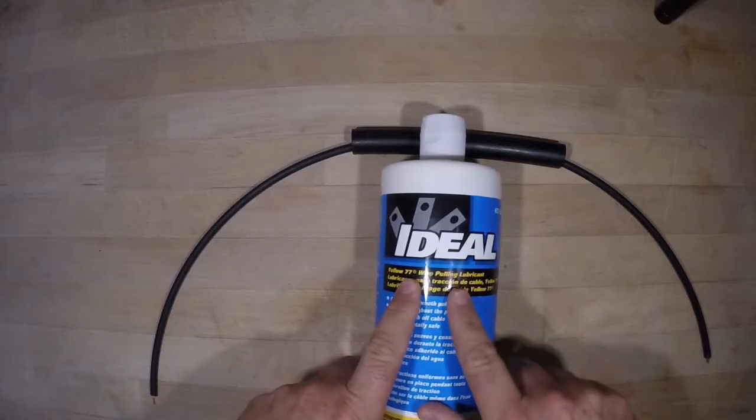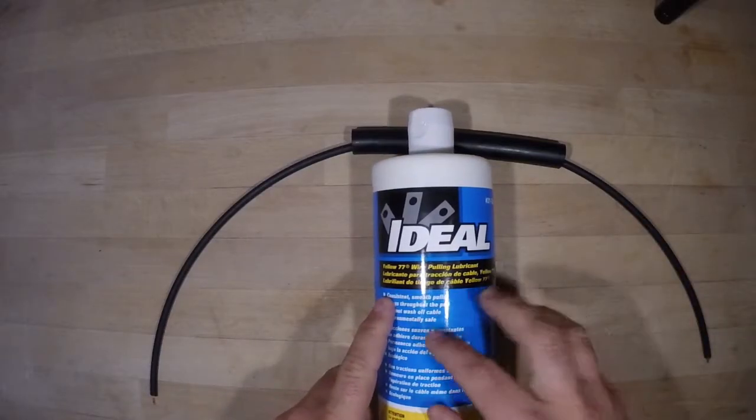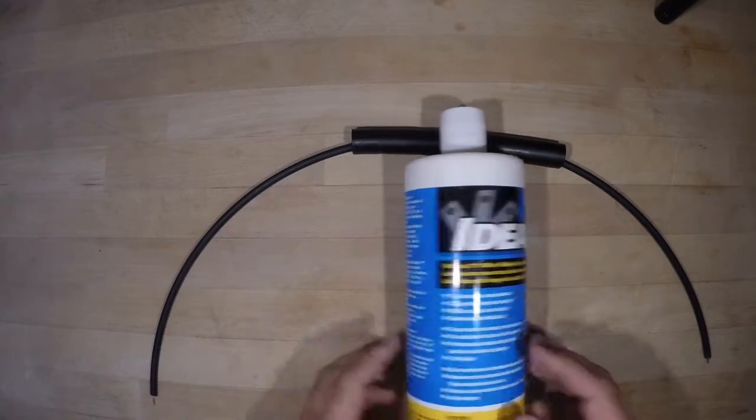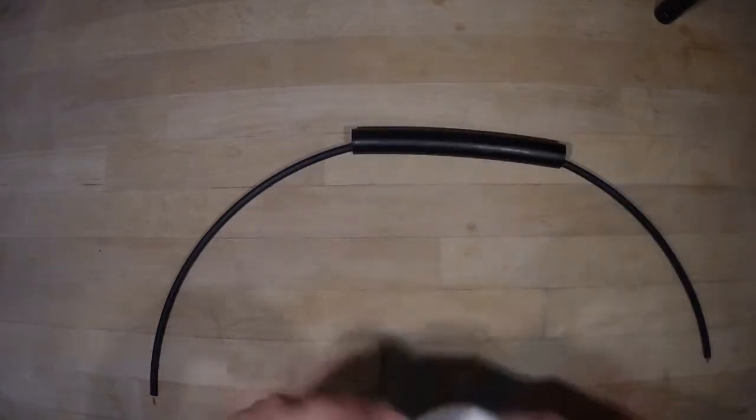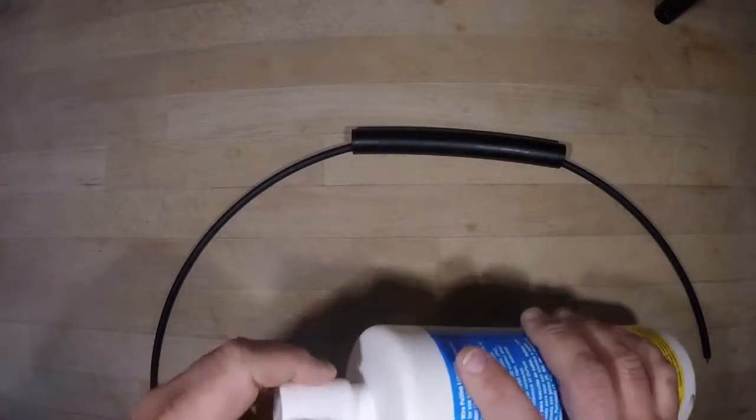This is Yellow 77 from Ideal. There are plenty of other types of lube out there. This is wax based, silicone is also available. It's quite gloopy this stuff, the silicone is a little bit less so, a little bit more watery.